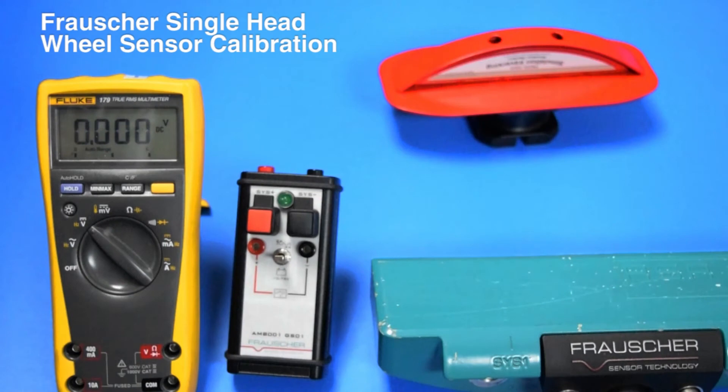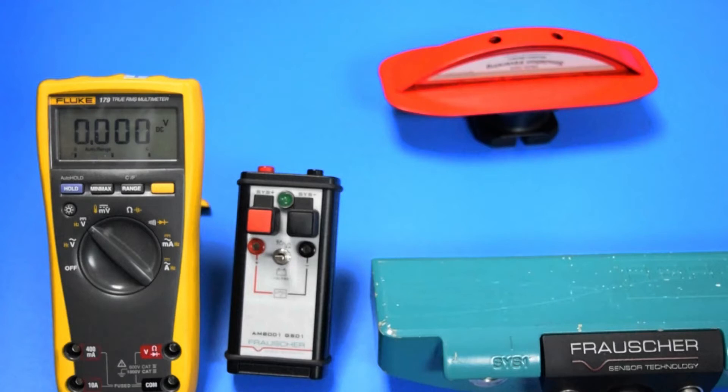This video describes the automated adjustment process for the Frausher single head wheel sensor. Complete this process at installation and after making any mechanical adjustments in the future.